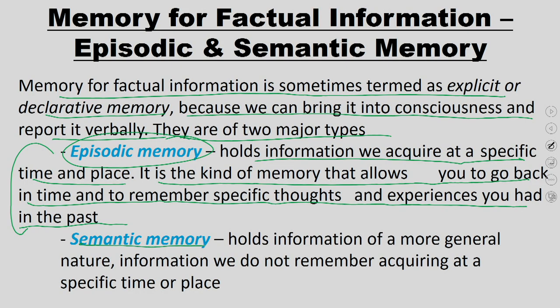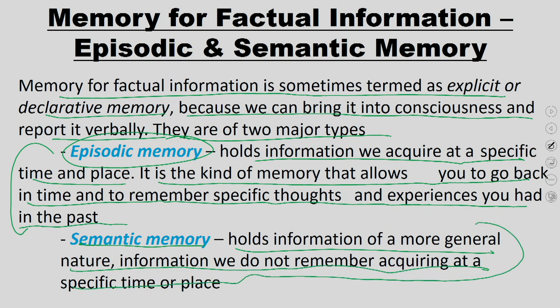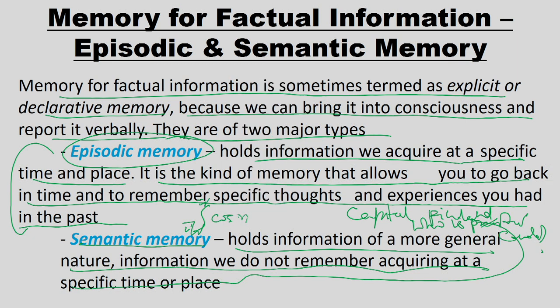Semantic memory holds information of a more general nature — information we do not remember acquiring at a specific place and time. For example: what is the capital of Finland, who is the president of Canada, how do you integrate cos x from −π/2 to π/2, simple integration and differentiation rules like sin x + cos x. These are rules and general knowledge not tied to one place-time event.